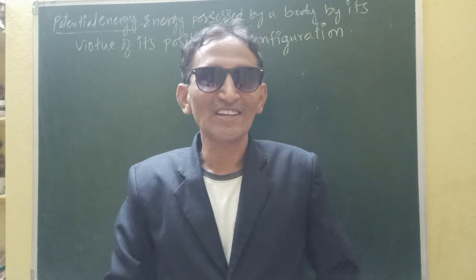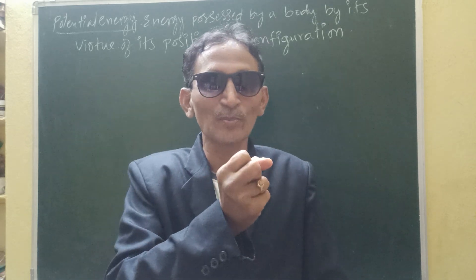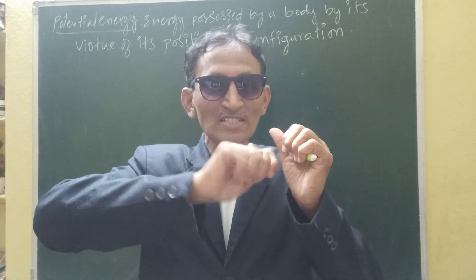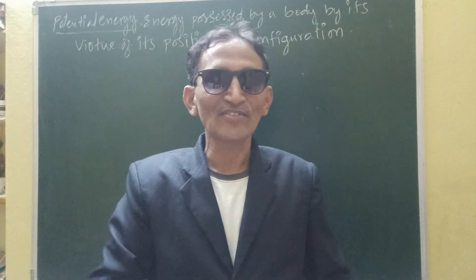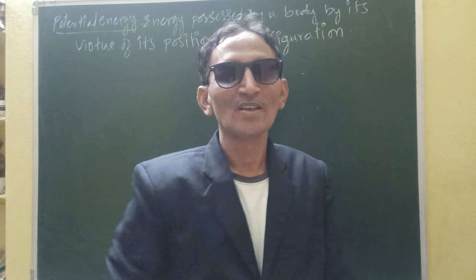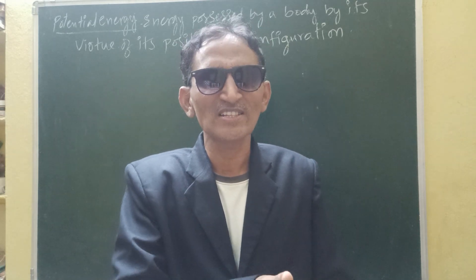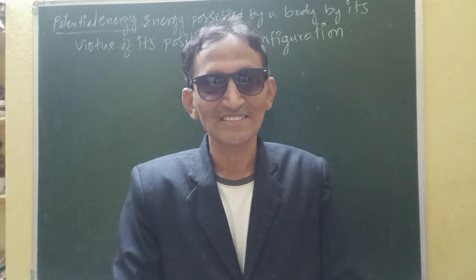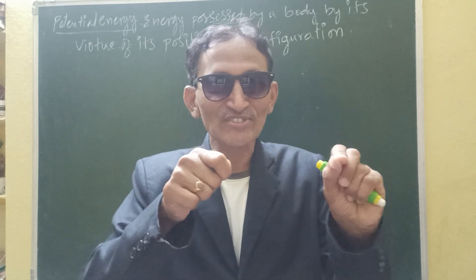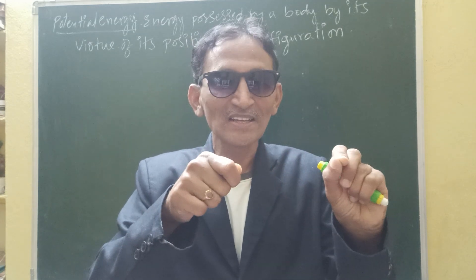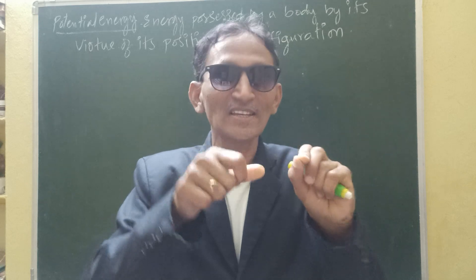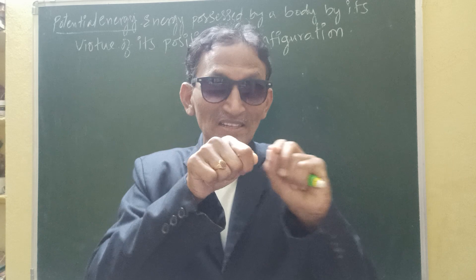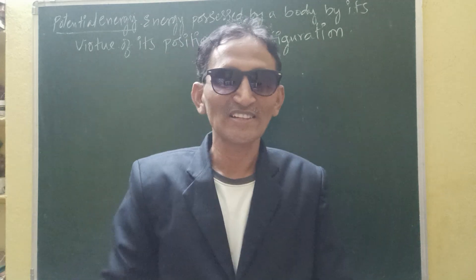A compressed spring in a toy — because of the change in size it has been compressed. When you give the key (chabi) to a toy and release it on the floor, it starts moving. So the compressed spring, there is a change in the shape — configuration is a change in shape. The compressed spring in a toy has Potential Energy. A stretched spring placed in a cycle bell — it has been stretched — it has Potential Energy.